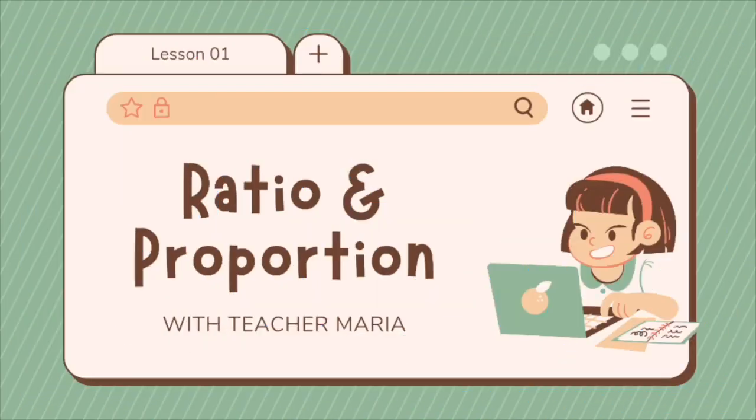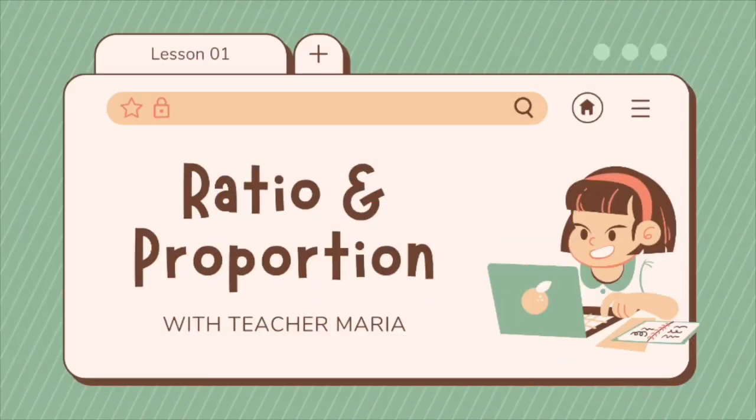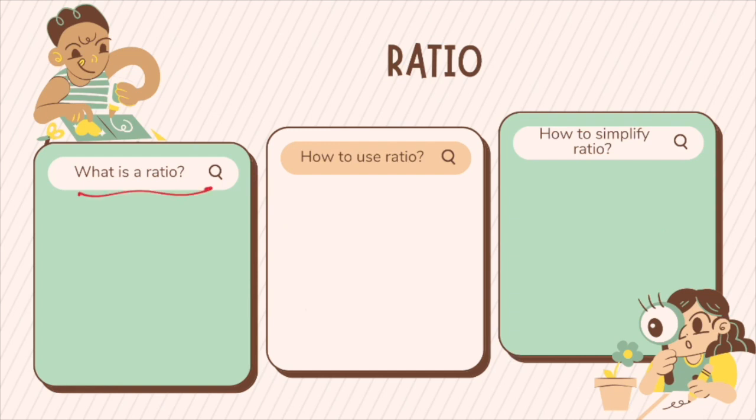Our topic for today is about ratio and proportion. So what is a ratio? A ratio is a comparison of two numbers. Ratio can be written in three different ways. It can be written as A to B, or A is to B, or A over B. Because the ratio is a fraction, your B cannot be equal to zero.